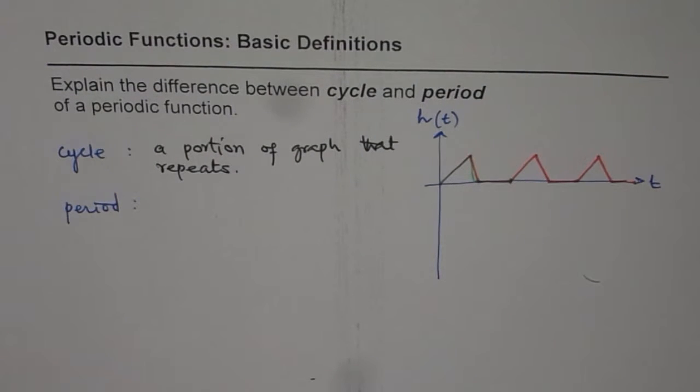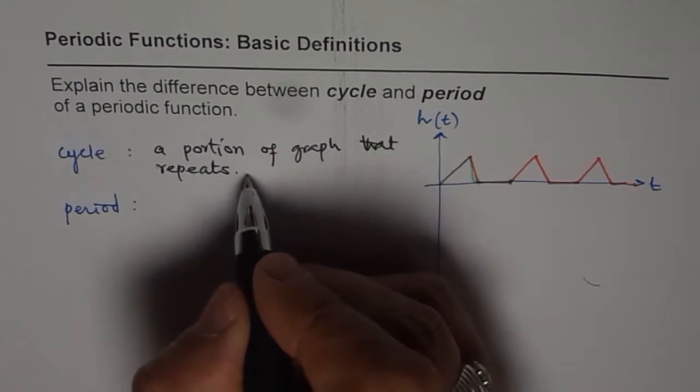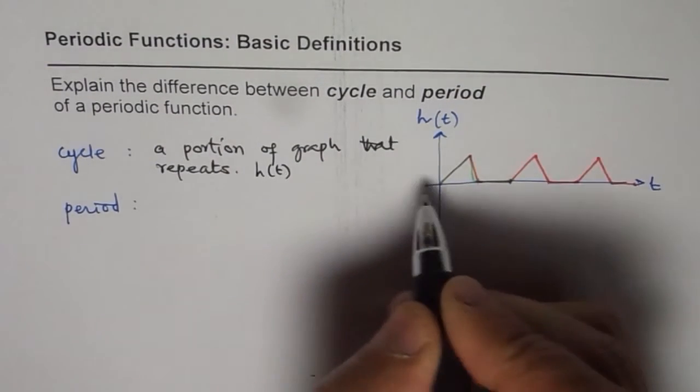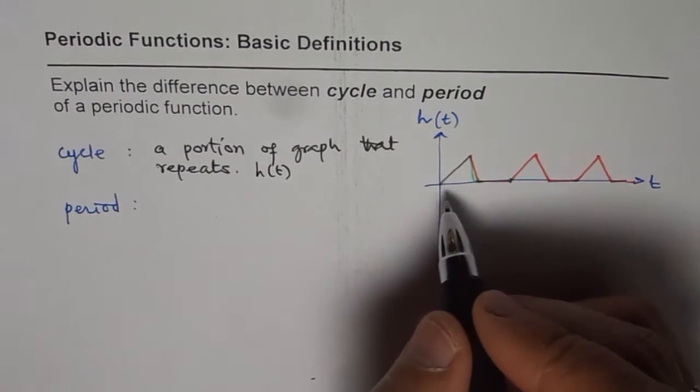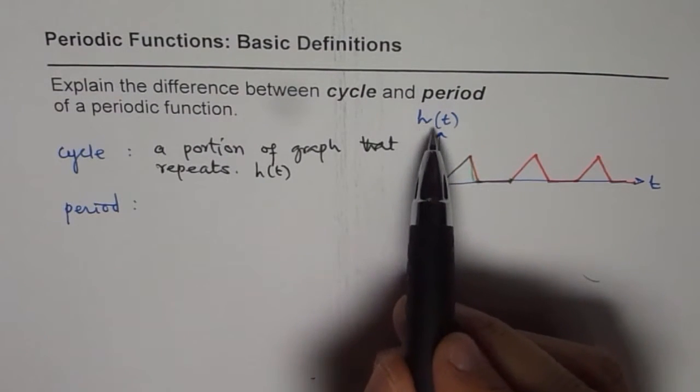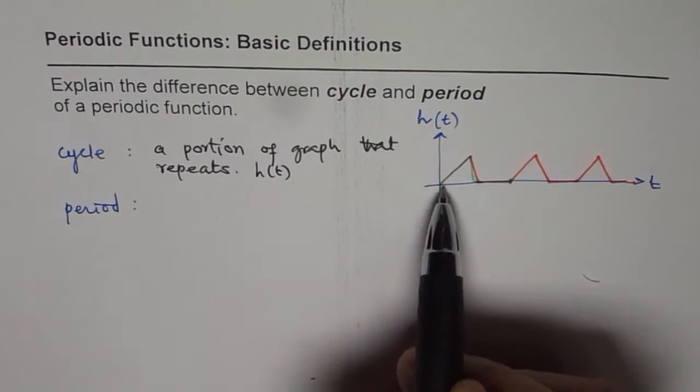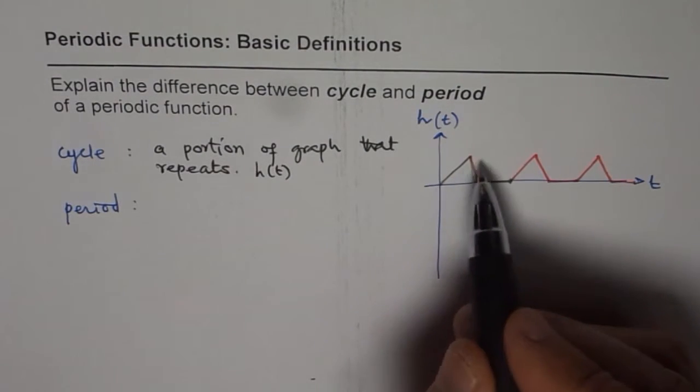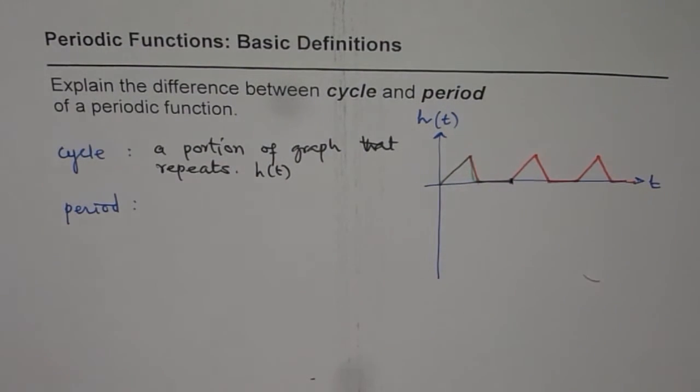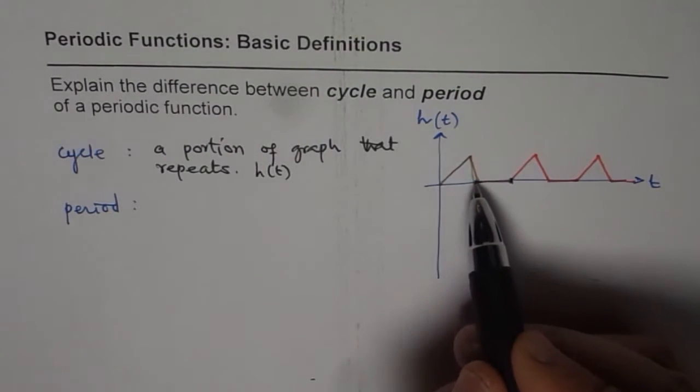So when we talk about a cycle, what are we referring to? We are referring to h(t), the values. We are seeing how is the height changing with time, and that is what is repeating. So a cycle here is the portion which I've shared.